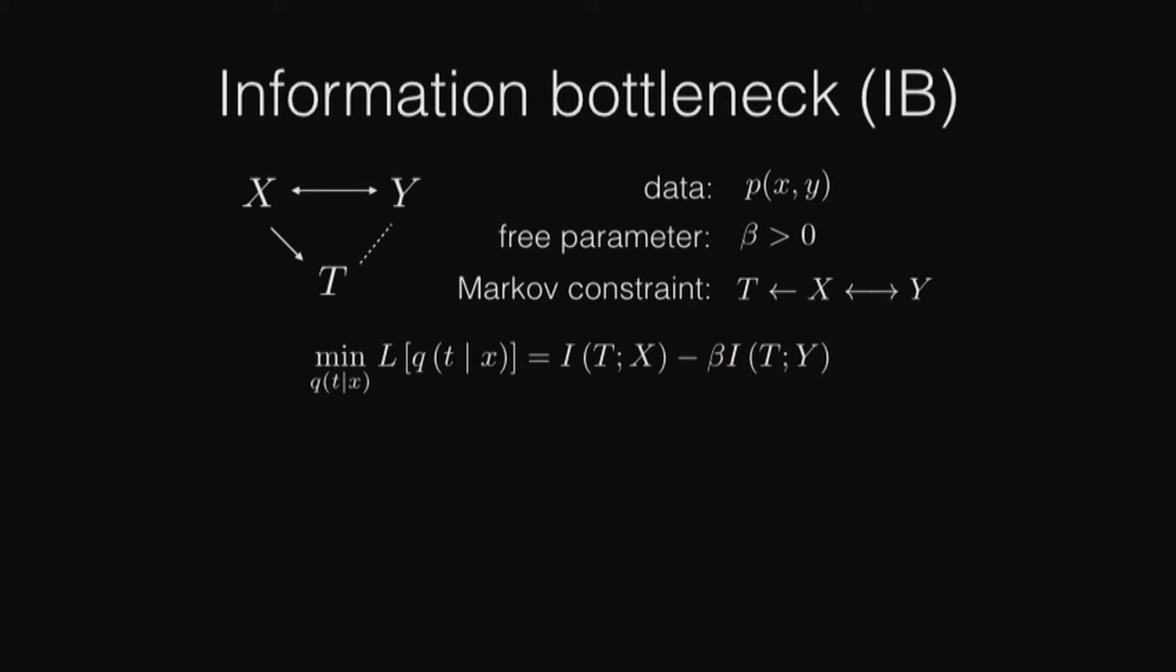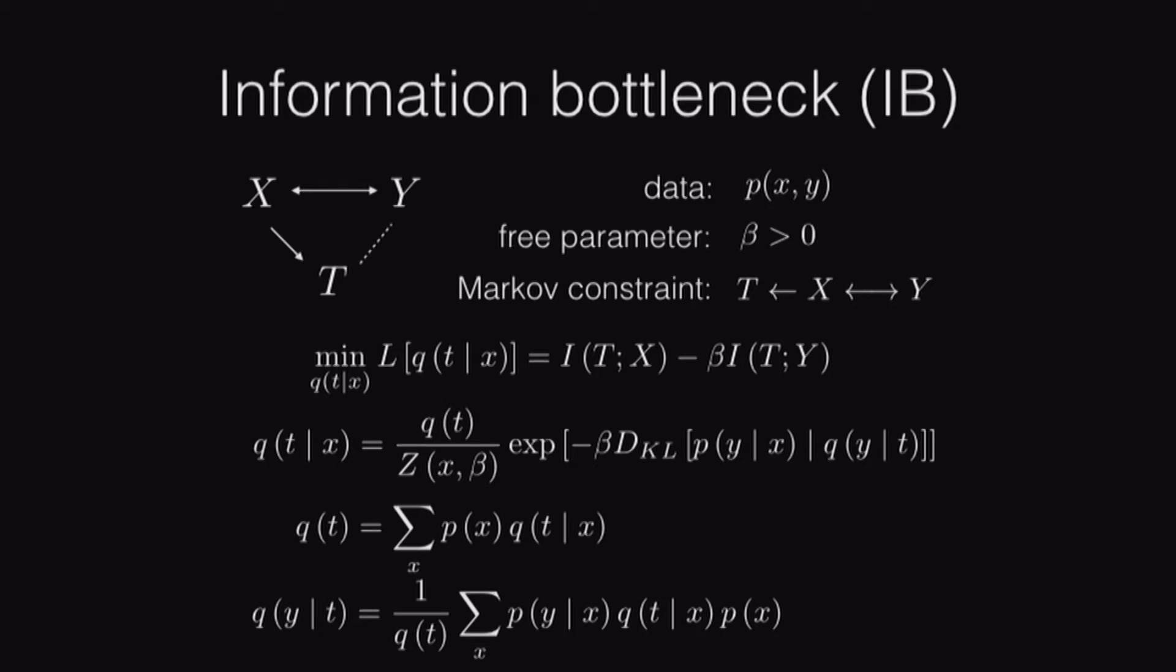This problem can be solved using a typical variational calculus approach. Take the derivative, set it to zero. When you do that, you get three equations, which you iterate to convergence from some initialization. The second and third equation aren't very interesting. They're just basically enforcing the rules of probability, like Bayes' rule and the Markov constraint as well. The only real meat in this is this first equation here for the encoder.